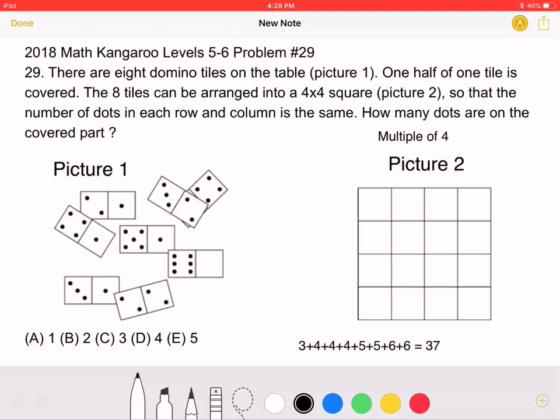There are 8 domino tiles on the table, as seen in Picture 1. One half of one tile is covered. The 8 tiles can be arranged into a 4x4 square, as seen in Picture 2, so that the number of dots in each row and column is the same. How many dots are on the covered part?